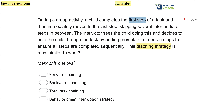We have a child who completes the first step of a task and then skips to the last step. As a result, the instructor is going to help the child through the whole task, but only helping on certain steps. In order to make sure all the steps are completed in order, the instructor is going to have the child complete the full task chain, only prompting after certain steps. So if we're going to teach a task chain entirely and not stop at the first step or start at the last step, what would we call that?